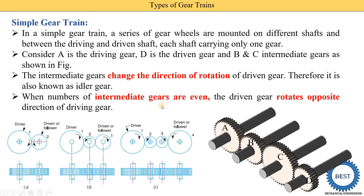When the number of intermediate gears is even — 2, 4, 6, 8 intermediate gears — then the driven gear rotates in the opposite direction to the driving gear. Here we see that the driving gear rotates clockwise, the next gear rotates anticlockwise, then clockwise, and the last is anticlockwise. Both driving and driven gears rotate in opposite directions when an even number of intermediate gears are present.